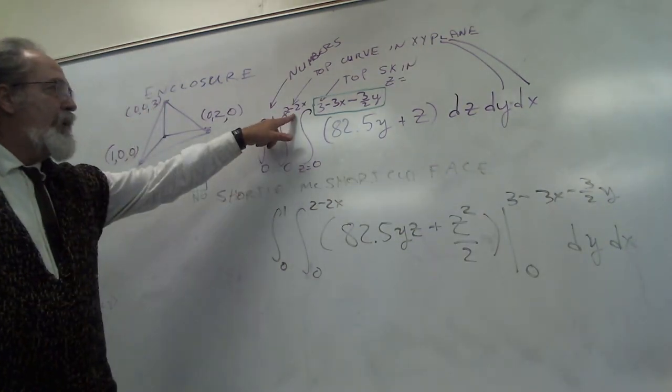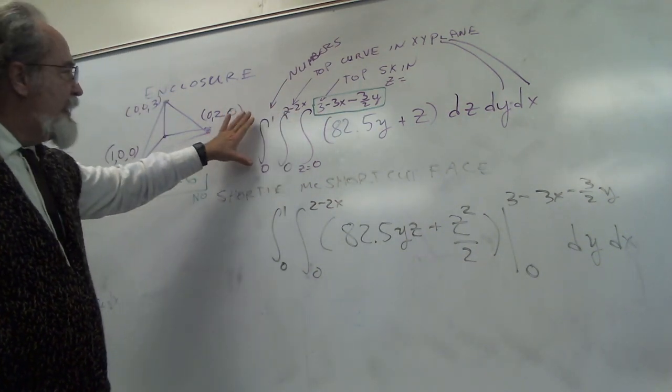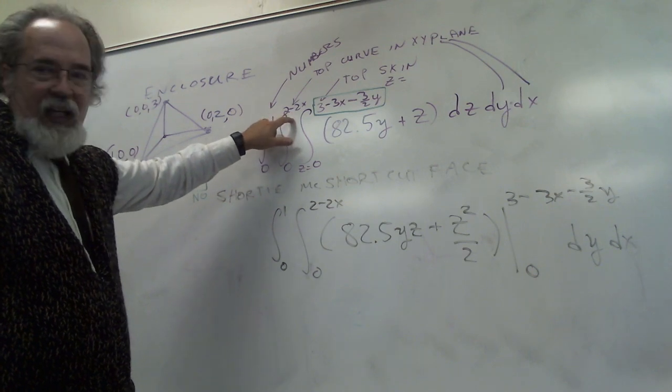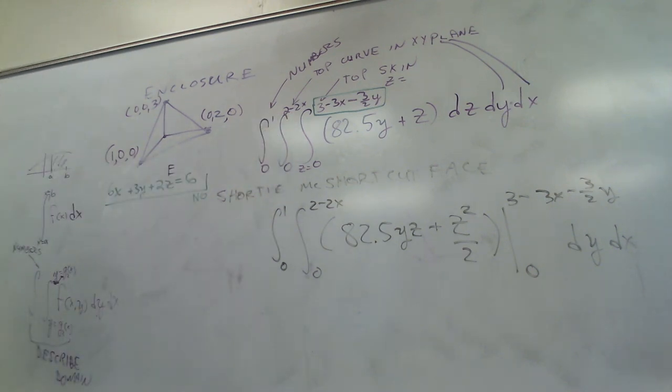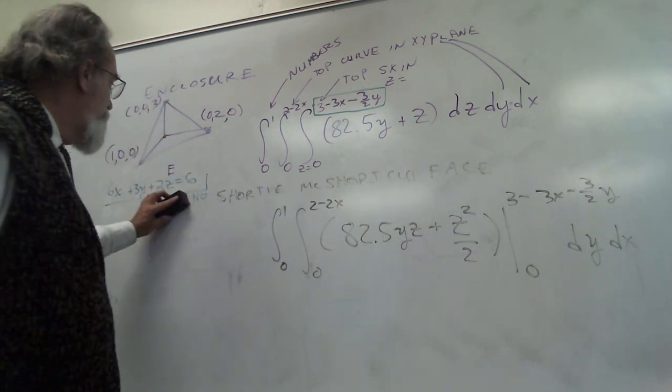Because there's an x up here, this dx comes last, but there's an x up here so I can't do this integral on its own because that would make this the last integral and it has a letter in that spot. So no shortcuts, no shortcut face.